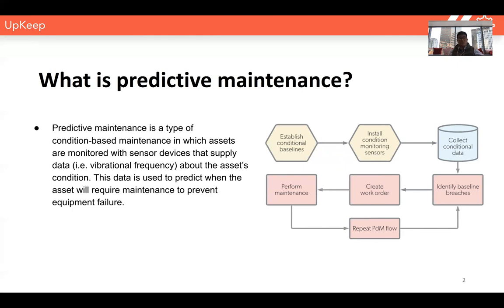This is different than breakdown maintenance, where you're basically waiting for a piece of equipment to fail before you perform maintenance on it. It's also different than preventative maintenance on a time-based schedule, like a filter change every six months. Predictive maintenance is all about predicting the optimal time to perform maintenance based on the condition of that piece of equipment or asset.